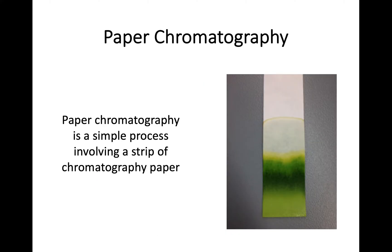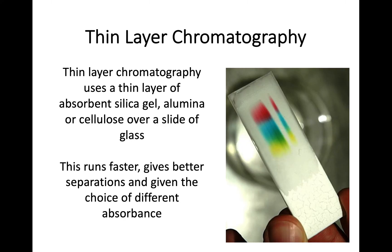There are different forms of chromatography. Paper chromatography is really simple — you just use chromatography paper, add a sample, and you'll see the different movement of those solutes throughout the paper, for example with leaf pigments. Thin layer chromatography uses the exact same process but with a thin layer of silica gel, alumina, or cellulose over a glass slide. It runs faster and gives clearer separations.